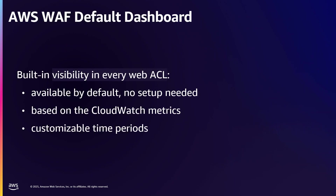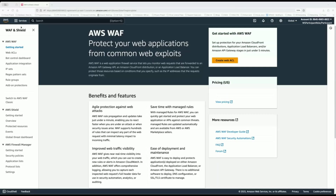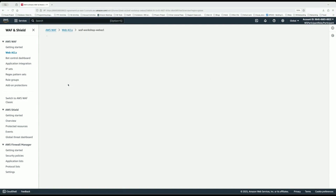Let's start with the default WAF dashboard, which most of you are already familiar with. The default WAF dashboard has built-in visibility into every Web ACL. The time periods are customizable, but you are using the basic CloudWatch metrics that are available — no customization. I have a demo walking through the default WAF dashboard. If you log directly into the Amazon console, you can go directly to your Web ACL.